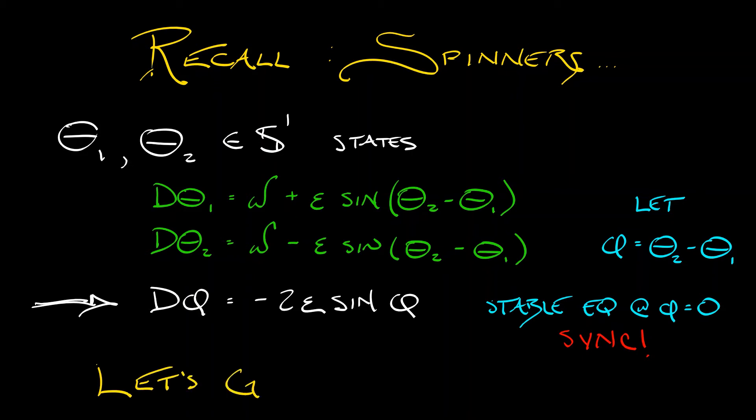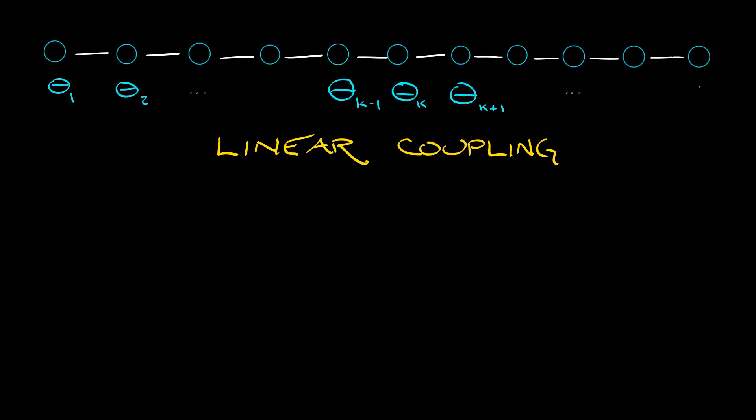Now, what we're going to do is generalize this not to three spinners, but to n spinners, or more technically, n plus 1 spinners. We're going to set up a linear chain of n plus 1 spinners, and we're going to couple these together. So the spinners are going to have states theta 1, theta 2, all the way up through theta n plus 1.